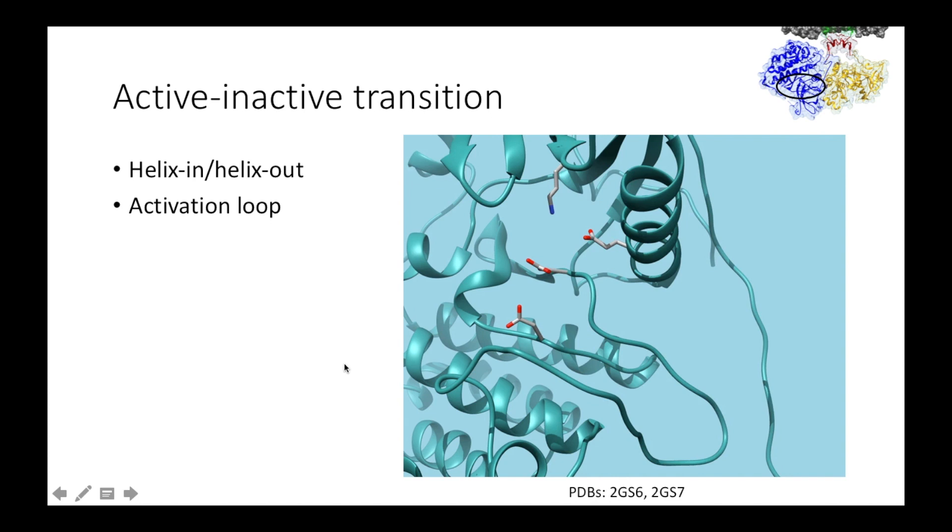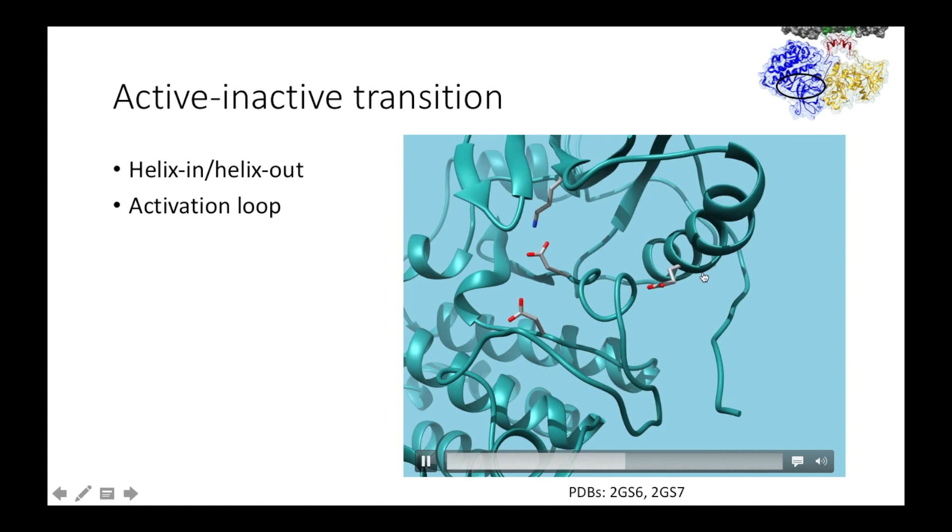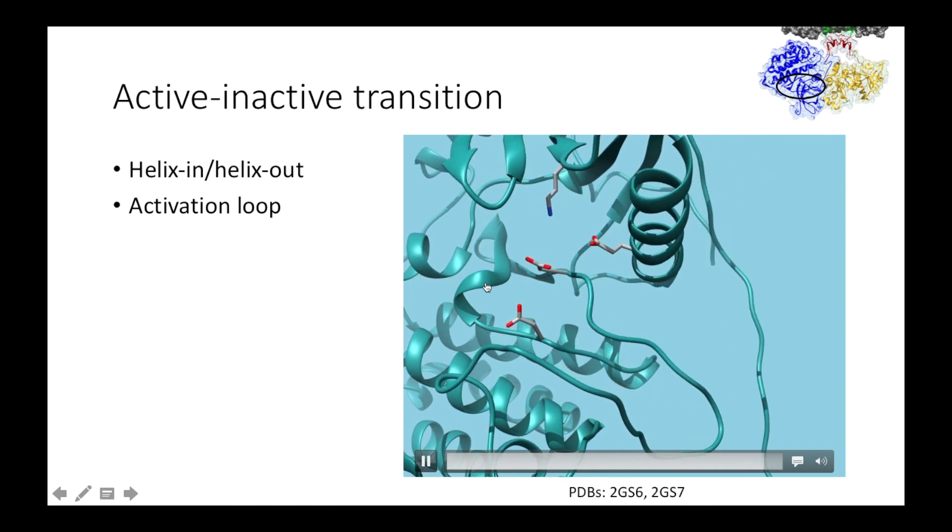Here is an animation showing the transition between active and inactive conformations. Pay attention to the activation loop here. In its active conformation, it's extended. However, it's going to contract as the kinase becomes inactivated. Helix alpha-C is here. Here is the ion pairing glutamate, the lysine, and the magnesium coordinating aspartate. Helix alpha-C moves out when inactive, and to activate it moves closer to the active site here.